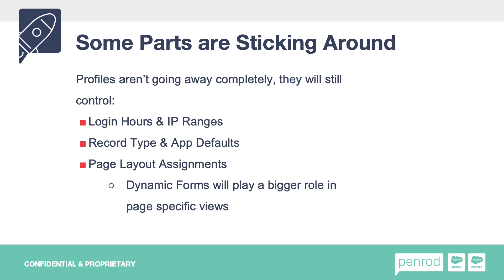Profiles aren't going away. They're still going to be around, but they're going to be very limited with what you can actually control. They're going to control your login hours and IP ranges, your record types and app defaults. So any of your defaults, profiles still can control those things, and your page layout assignments are still going to be dictated by your profile. Profile and record type can still control page layout assignments, and you can still set your defaults and record type access at the profile level.